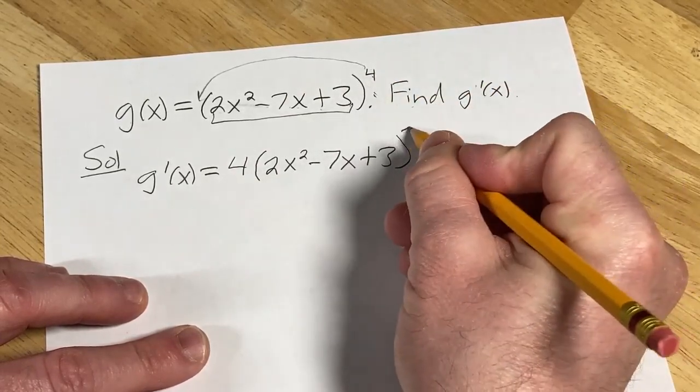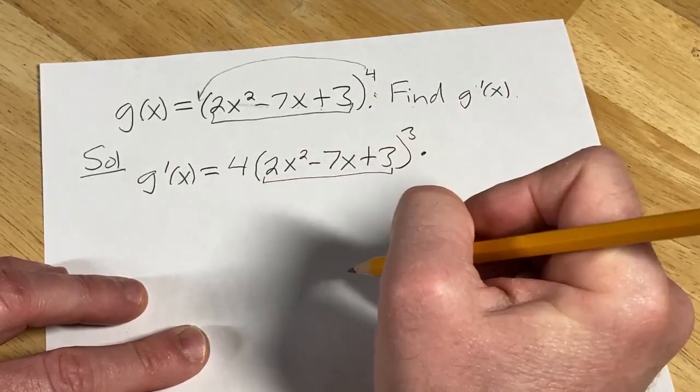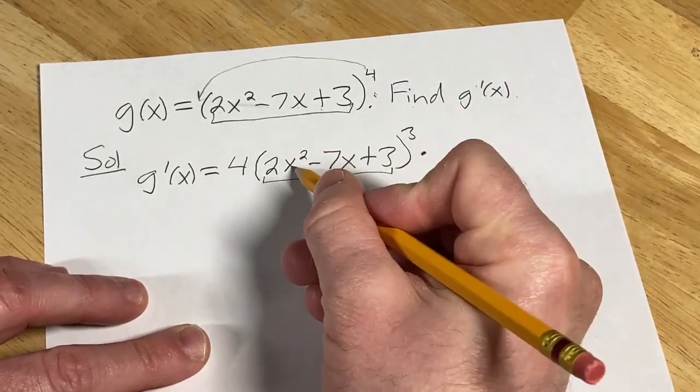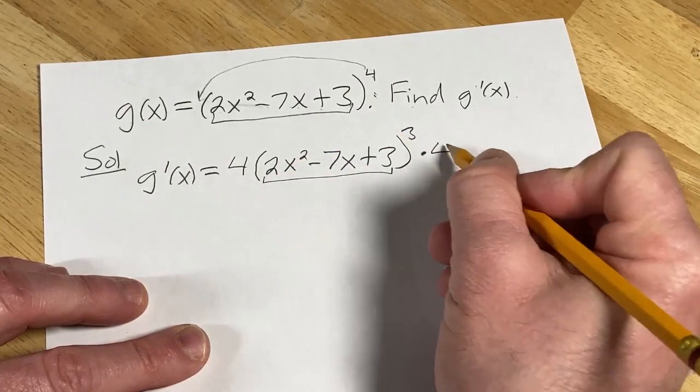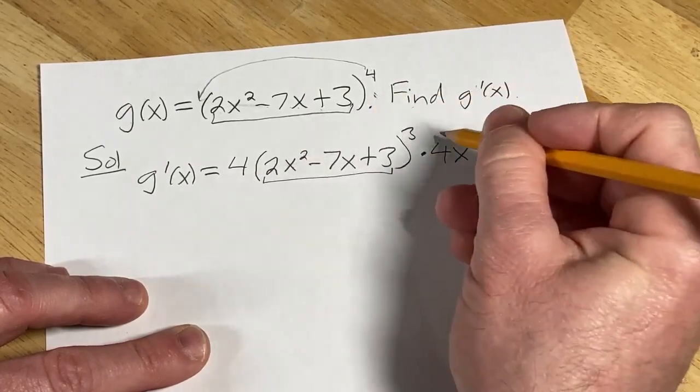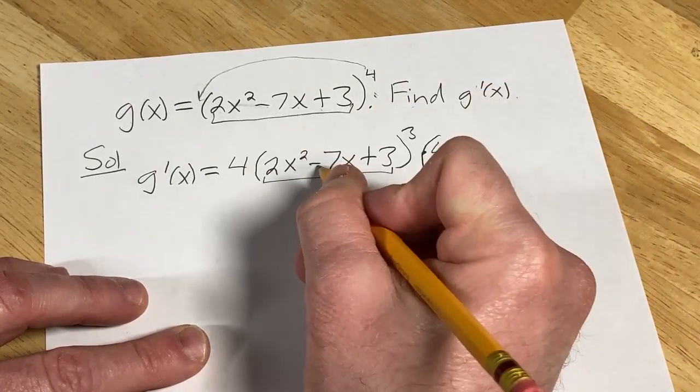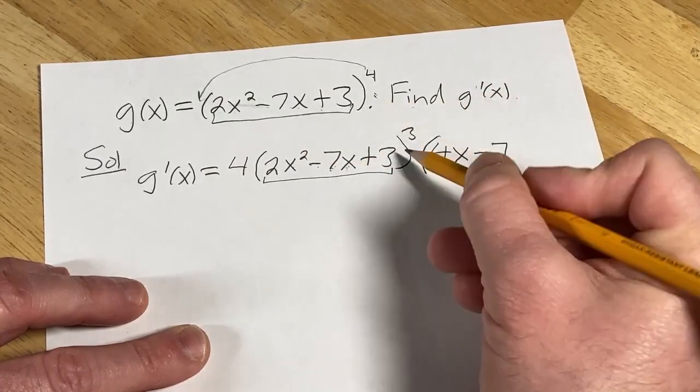The derivative of 2x² is again the power rule: 2 times 2 is 4, so we get 4x because you subtract one from the exponent. Then minus the derivative of 7x is 7, the derivative of 3 is 0 so we don't write it.